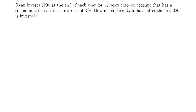The first thing we want to notice is that Ryan is making an investment of $200 at the end of each year for 15 years. We have a period of 15 years where at the end of each of those 15 years he is making an investment of $200. Since we have a series of payments over a period of time, we are working with an annuity. We are looking to find how much Ryan has in the account after that last payment is made at the end of that 15-year period, so we know that we are looking at the future value of an annuity.